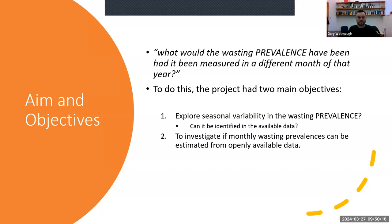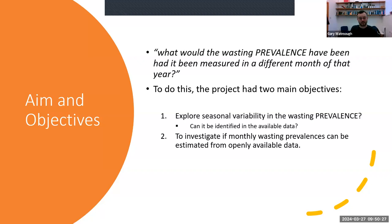Our two main objectives: the first was to explore whether seasonal variability in wasting prevalence exists — if there is one, can we find it, can we see it, can it be identified in the available data?